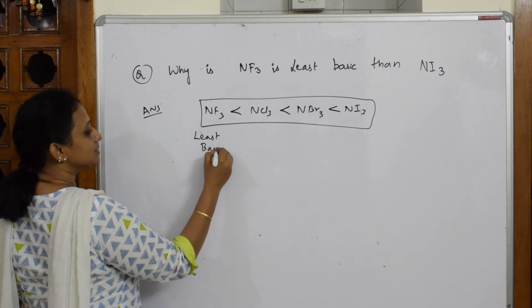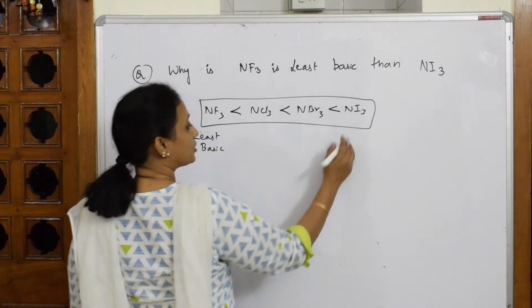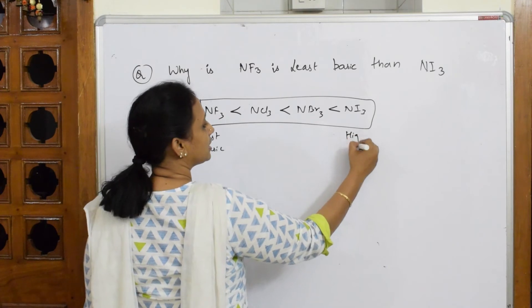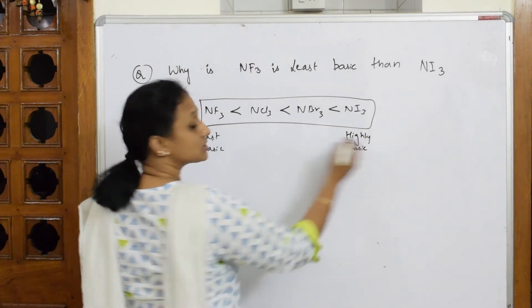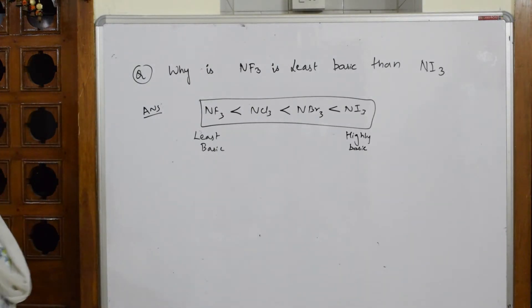Now according to this concept, according to the question, NF3 is least basic. According to the question, NI3 is highly basic. I'm comparing this and this. Let us speak the basic nature in terms of Lewis acid and Lewis base.